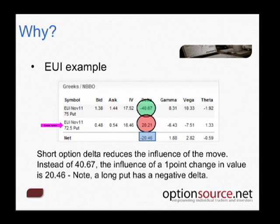What I run into quite often are people taking advantage of the spread strategy, then getting a really quick move in the underlying security — the underlying pair value — and they cannot understand why they're not profiting as much. We have to understand that any time we create these spreads, all of the different variables are seeking to offset one another. The focus is trying to offset an expensive option contract, creating a volatility-neutral strategy. The short option delta reduces the influence of the move — instead of $0.40 or $0.67, the influence of a one-point change is $0.20 to $0.60.